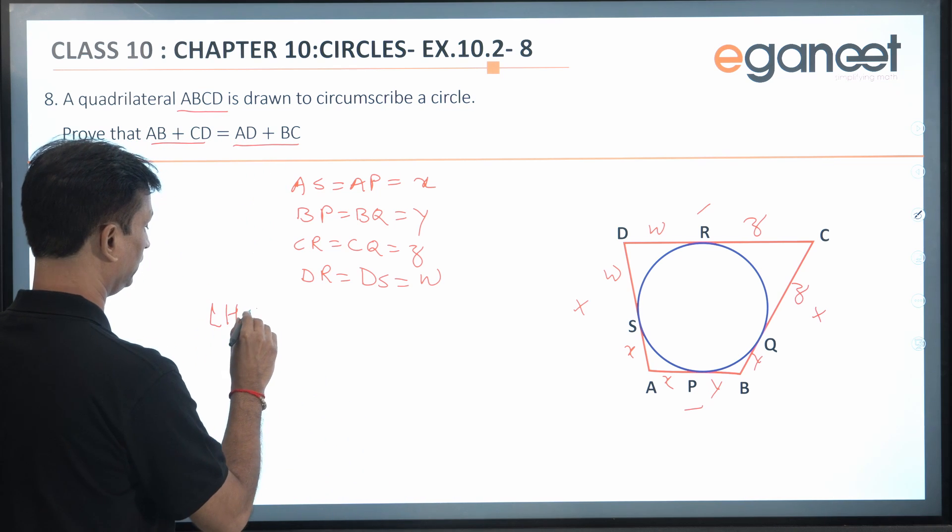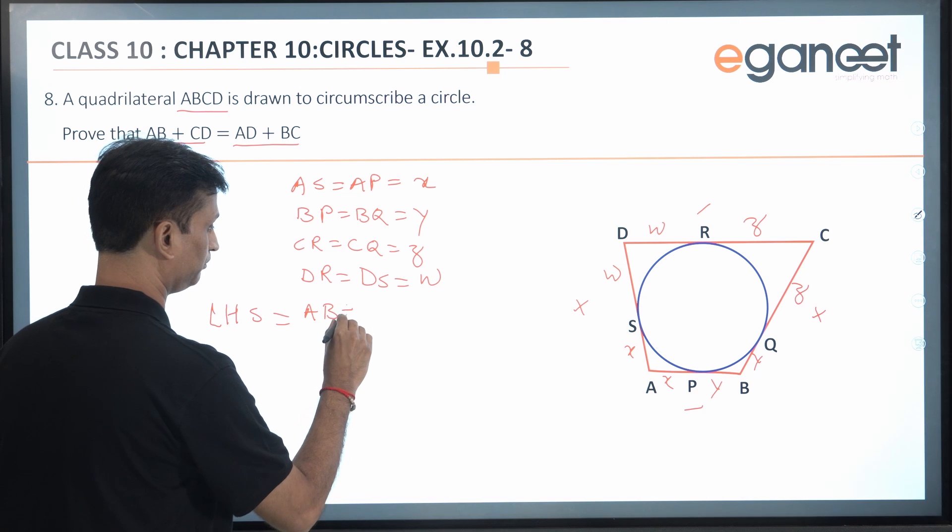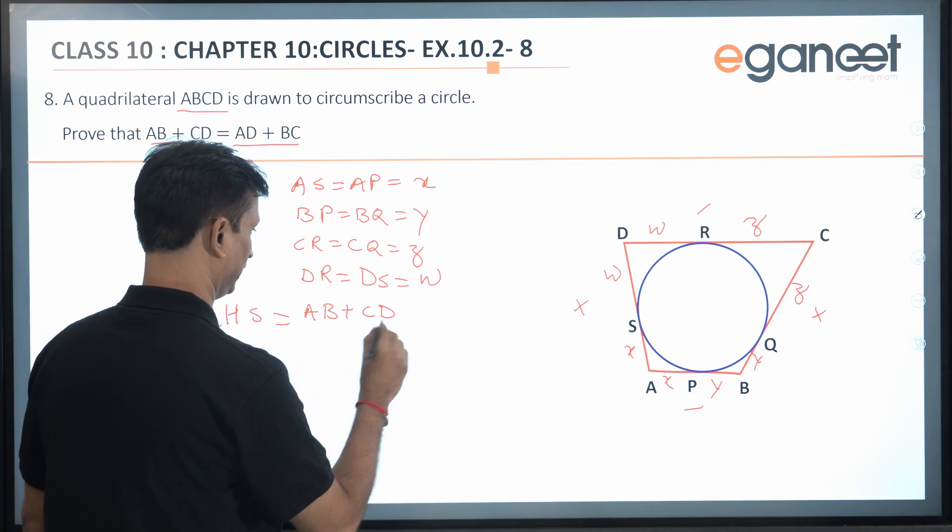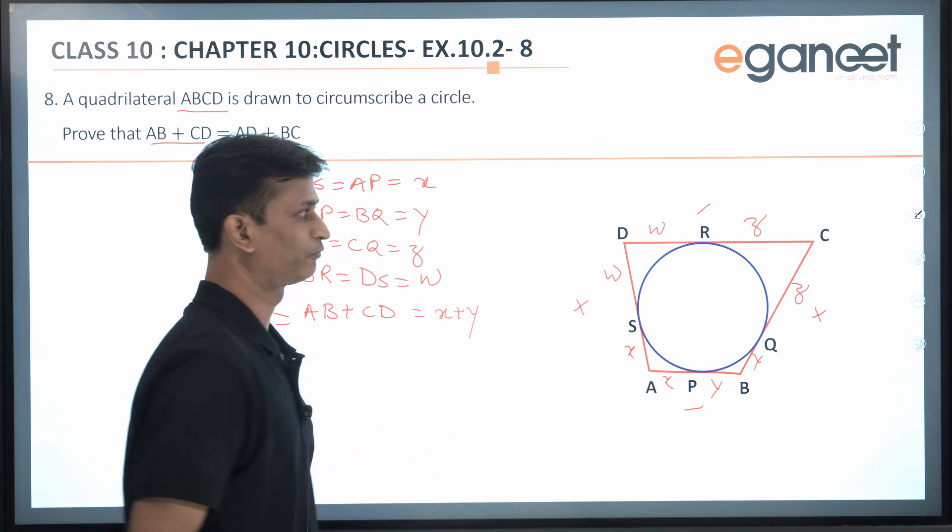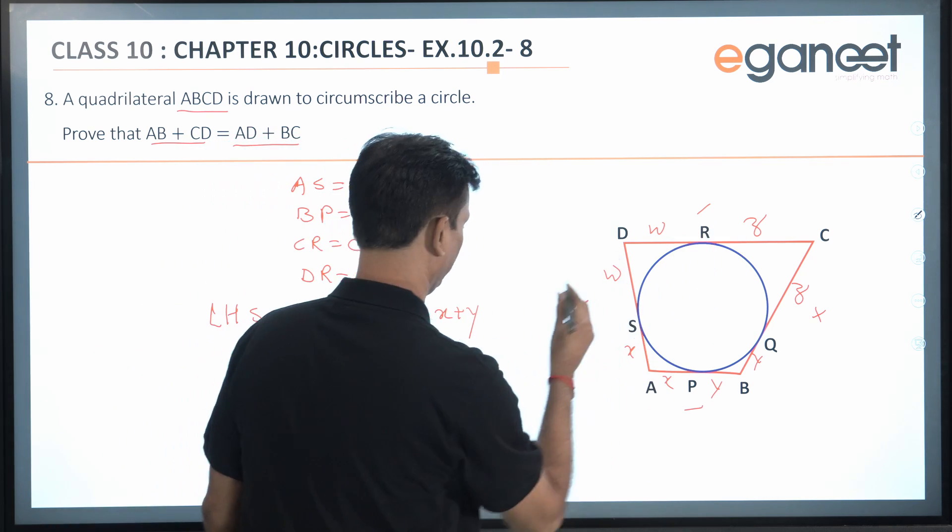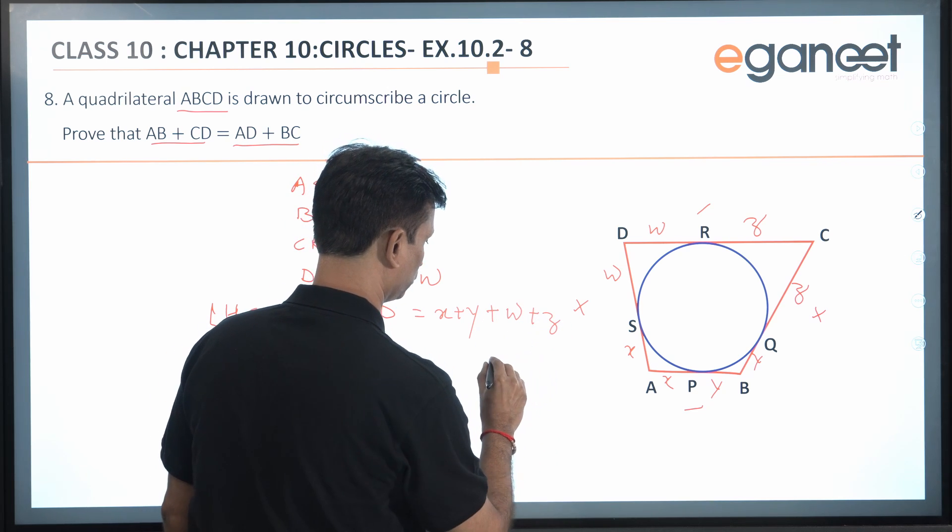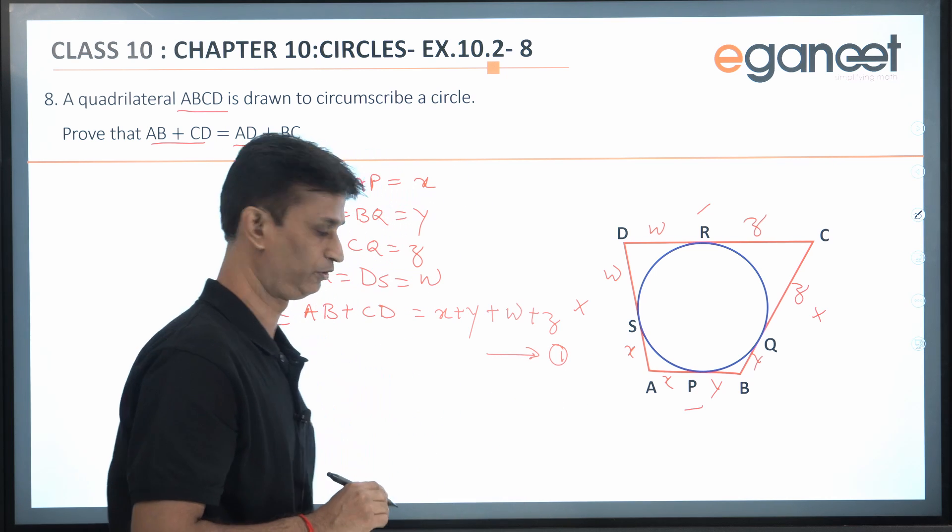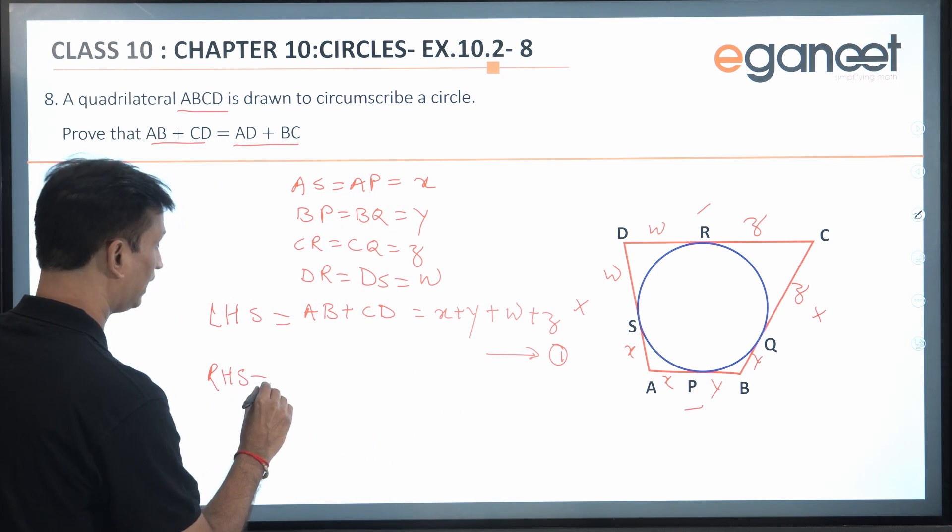Now in the LHS, we are having AB + CD. So from the figure, what will be AB? That will be x + y. And what will be CD? That will be w + z.